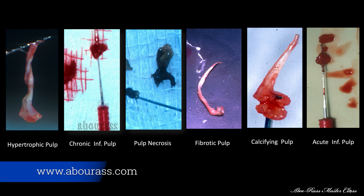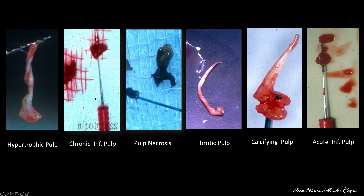And then you will develop all kinds of pulpal diseases: chronic pulpitis, acute pulpitis, symptomatic pulpitis, pulp necrosis, atrophy, calcification, et cetera. All of this can be happening without any symptoms — asymptomatic.